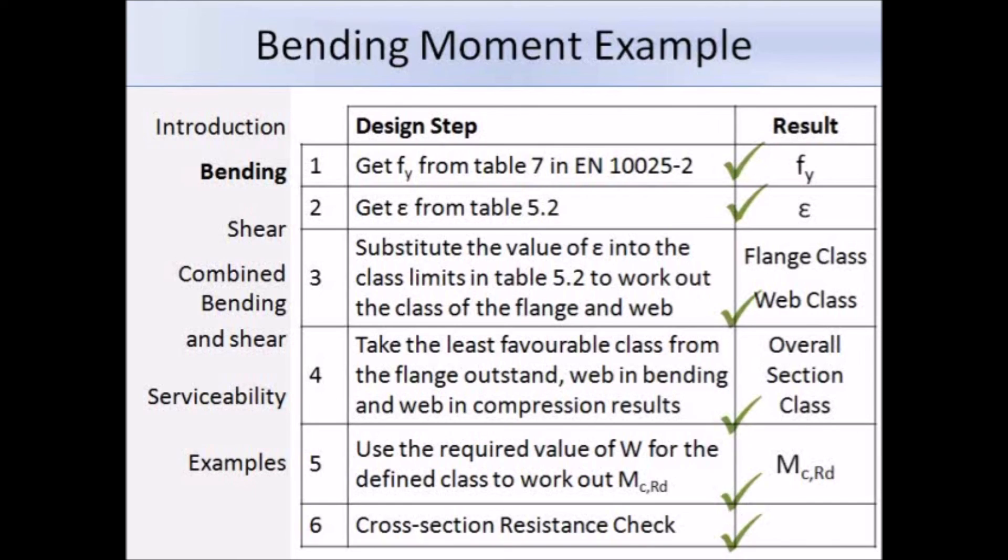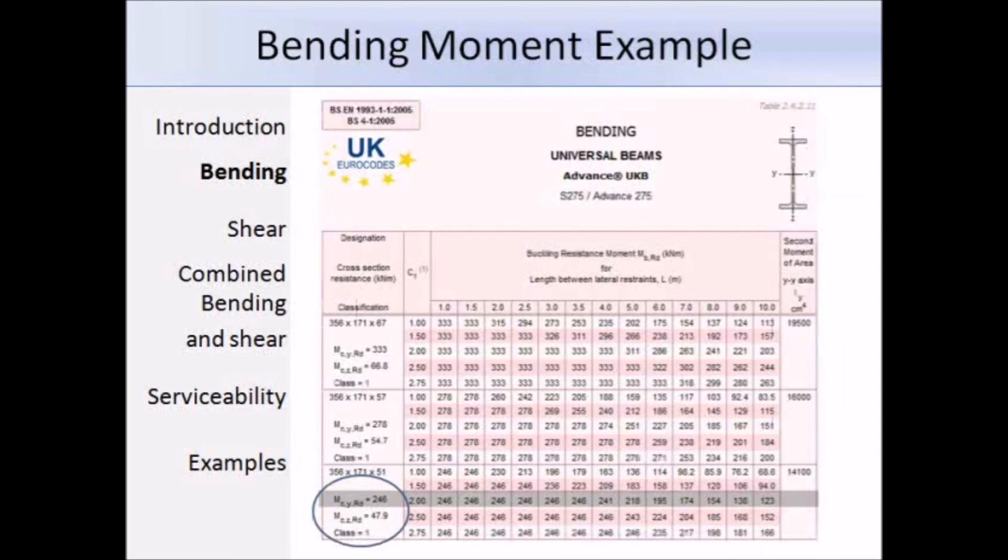Rather than carry out that calculation by hand, we could save time and simply refer to the blue book. Here's a screenshot from the interactive blue book. I've selected the option for EN 1993 part 1-1. From the menu I've selected bending, and I've scrolled down to the beam that we have used in the example: 356×171×51 UB in grade S275. I've circled this part and you can see that it says class 1, which is the same as we had worked out by hand.